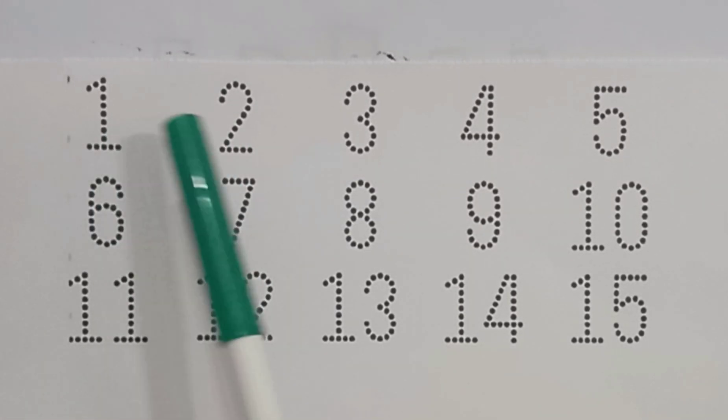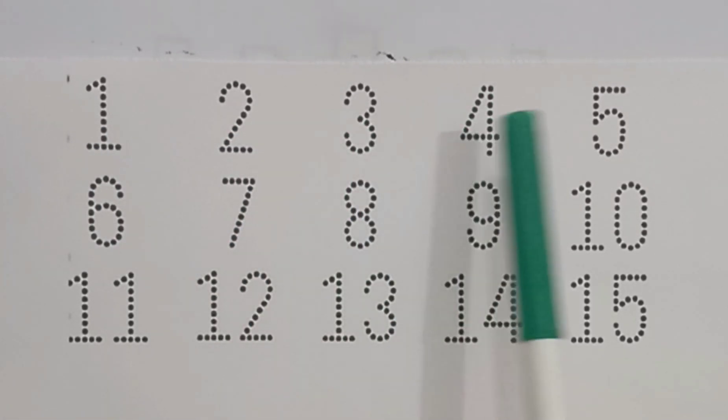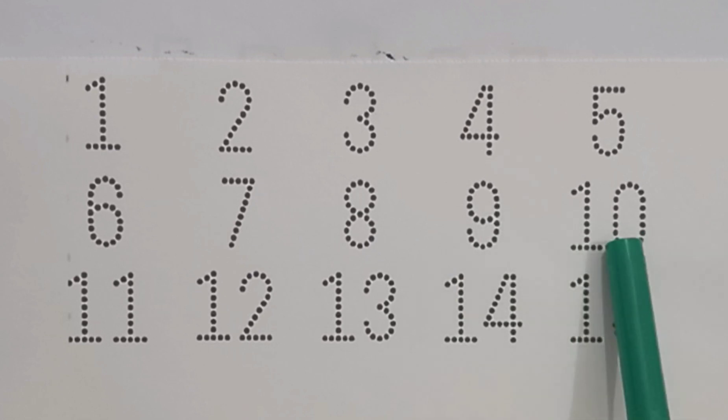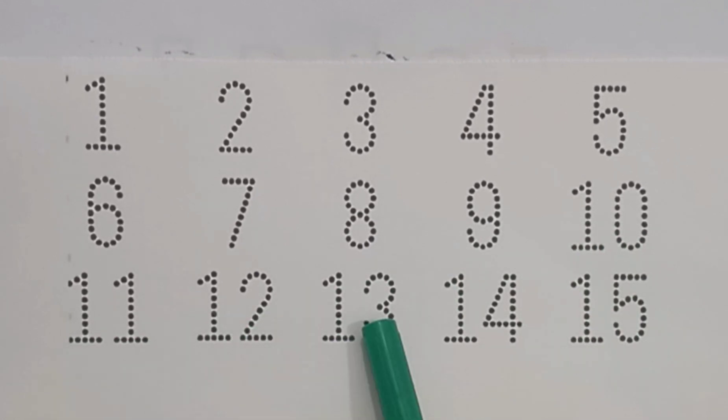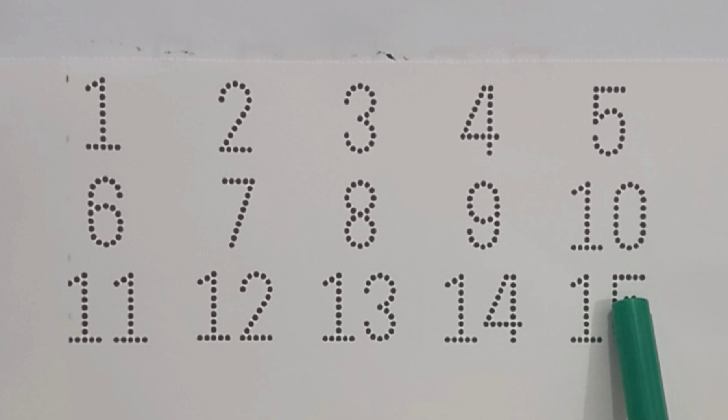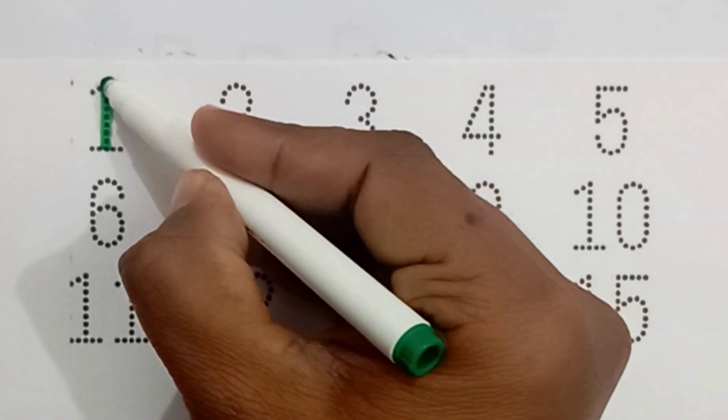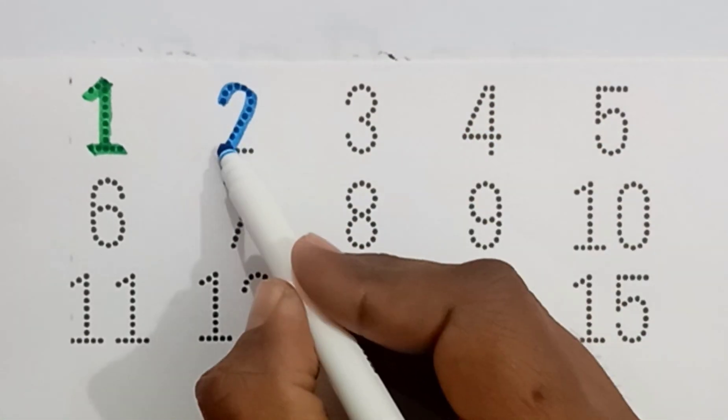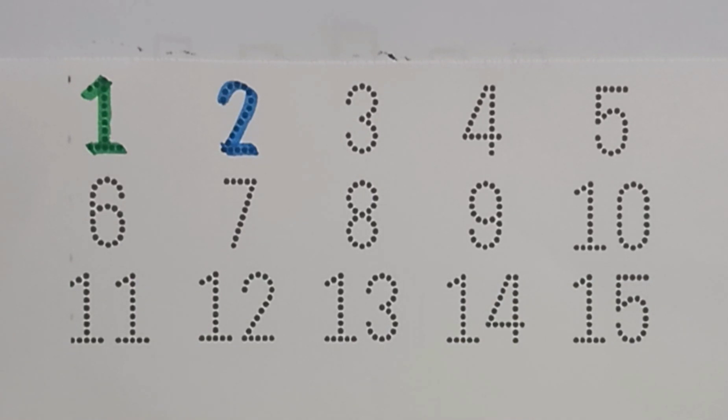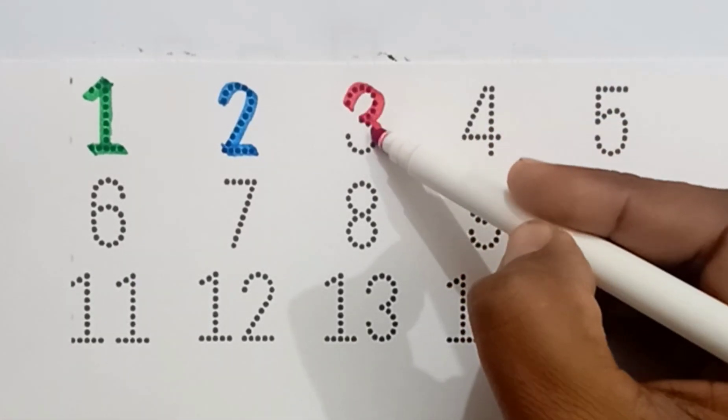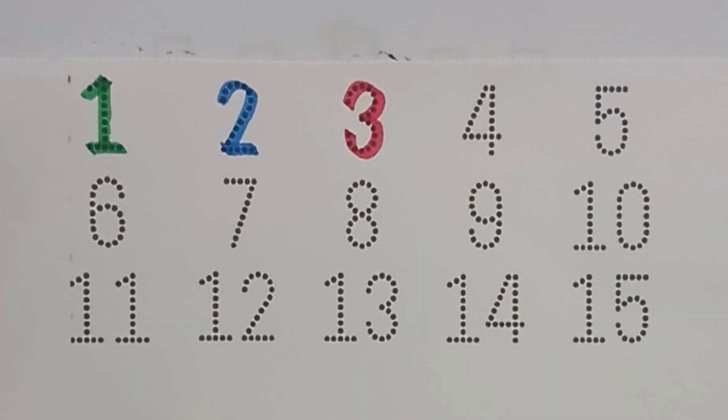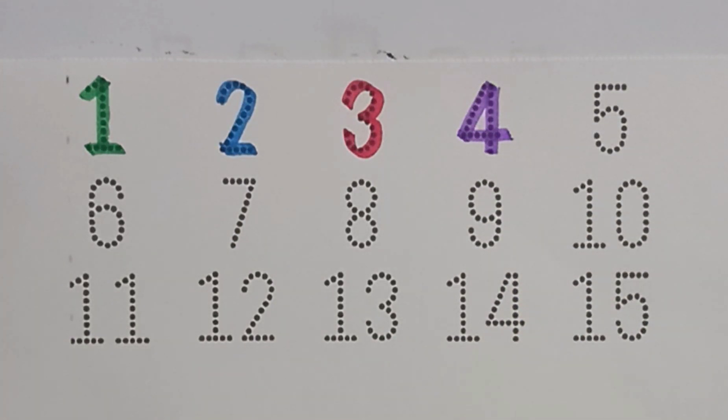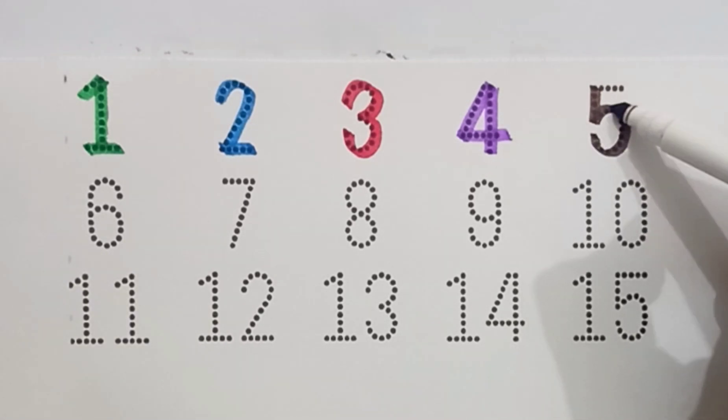1, 2, 3, 4, 5, 6, 7, 8, 9, 10, 11, 12, 13, 14, 15. Let's start. Green color 1, blue color 2, red color 3, purple color 4, dark brown color 5.